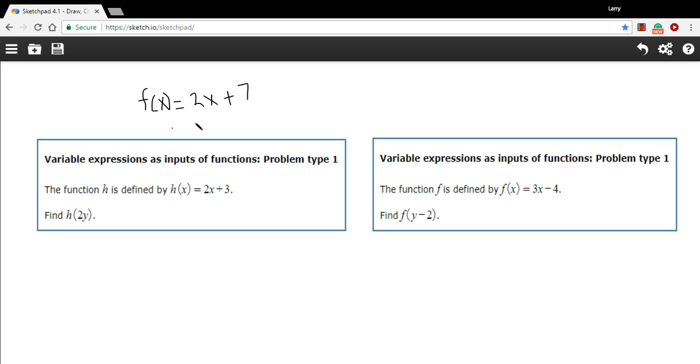So there's a function f of x equals 2x plus 7. And when you're asked to evaluate a function, that's usually by plugging in some number for x. So you might be asked, what does f of negative 1 equal?